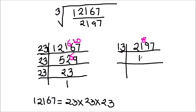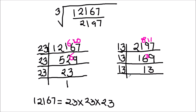13 times 6 is 78, and then we have a remainder of 11 here. This becomes 117, and 13 times 9 is 117. Now 169 is again divisible by 13. 13 times 1 is 13, and 3 is the remainder. This becomes 39, and 13 times 3 is 39. And 13 is only divisible by 13, so 13 times 1 is 13. So the prime factors of 2197 are 13 times 13 times 13.